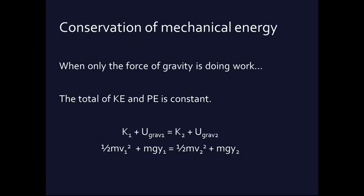Kinetic energy is one half mv squared, and as we just said, potential energy is mass times g times y. So the kinetic energy at point 1 plus the potential energy at point 1 equals the kinetic energy at point 2 plus the potential energy at point 2.